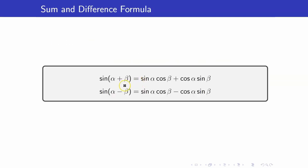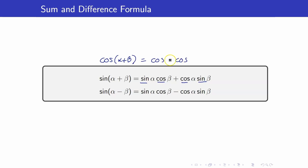Here are the sum and difference formulas for sine. For sine of the sum of two angles, you have sine of the first times cosine of the second, plus cosine of the first times sine of the second. Notice the difference from cosine: for cosine, the first term has both cosines, while for sine you have sine-cosine and cosine-sine. Also, for sine, the sign in the formula follows the sign of the angle — plus stays plus, minus stays minus.